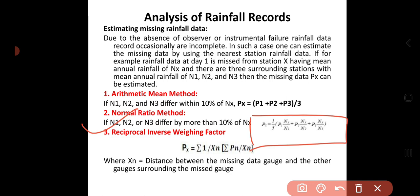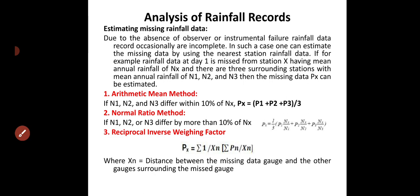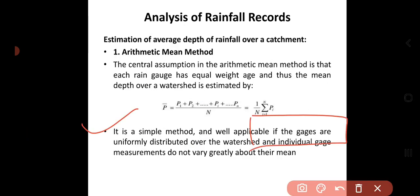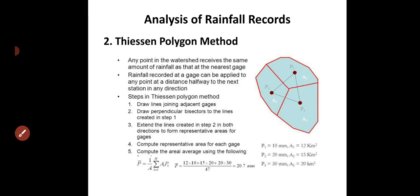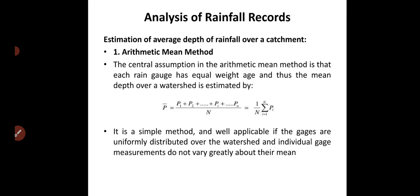The third method is the reciprocal inverse distance weighing method. Here we apply the inverse of the distance: Px = Σ(Pn / Xn) / Σ(1 / Xn), where Xn is the distance to station n. This method is also quite reliable. To summarize: in the arithmetic mean method, just take the average of all rainfalls and calculate the missing rainfall. These three methods are basically for missing rainfall calculation.